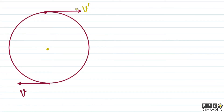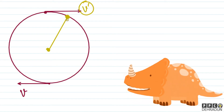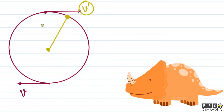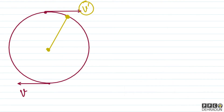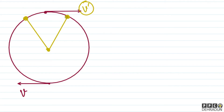One more thing: if we reach the topmost point and tension is just zero, then what happens next? By symmetry of the motion, the situation on the left and right sides is symmetric.